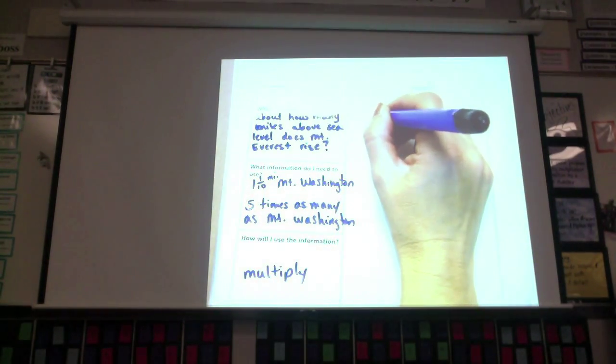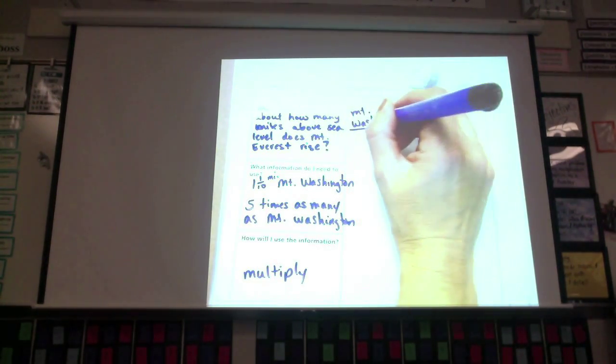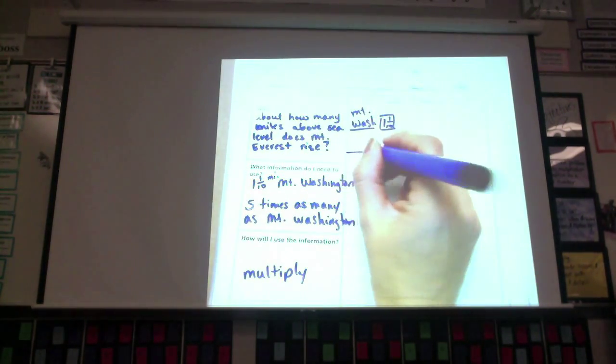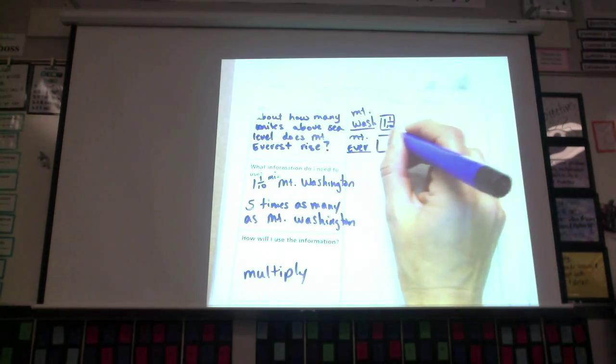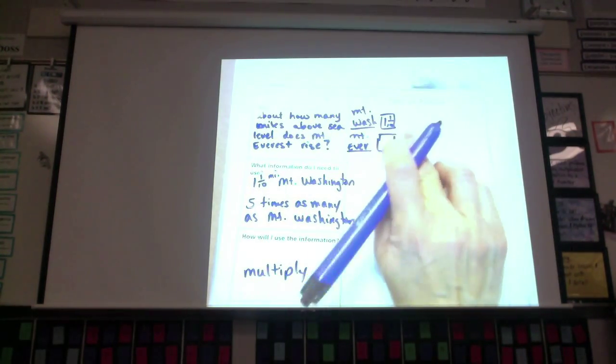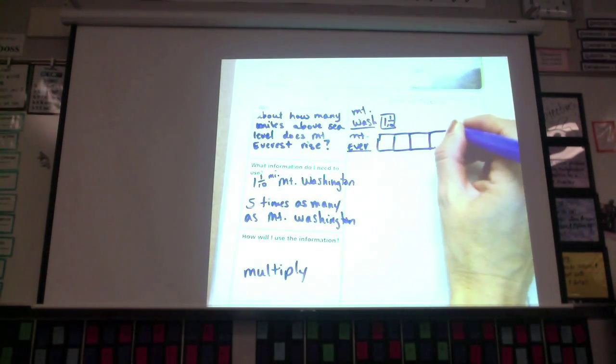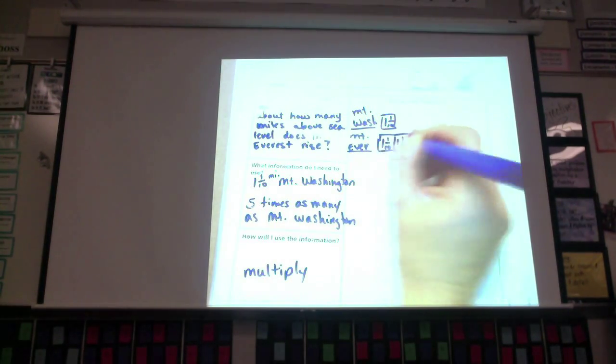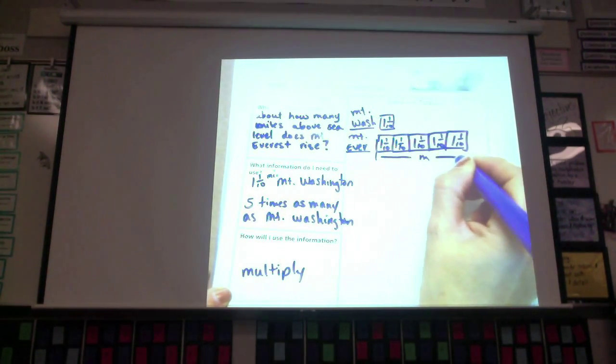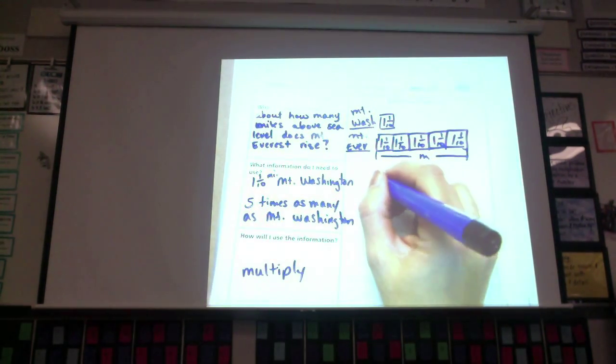Now we're going to go ahead and solve it. We can use the bar model like we did earlier. This is Mount Washington. And in there goes one and one-tenth. And Mount Everest is going to be how many boxes, class? Five times as many. Right, because it's five times as many that need to be connected. So in each one of these, I'm going to put one and one-tenth. I'm using M here. Does anybody have any idea why I might use M? I can use any variable I want. Why would M be a good one? Haley? For miles. For miles, right. I like M because it's the miles.